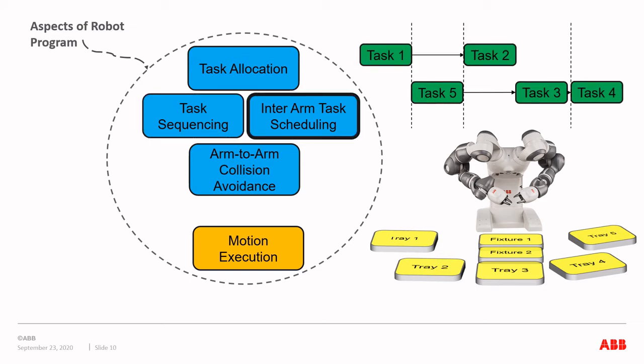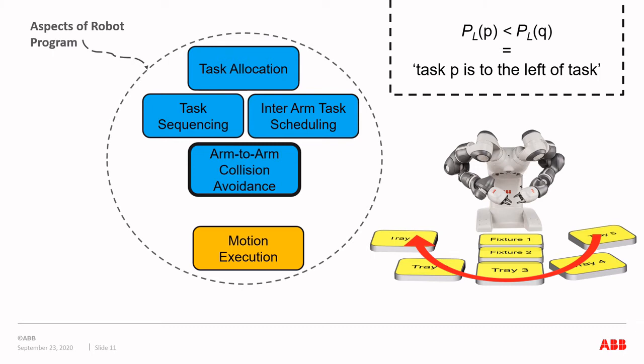A third aspect is inter-arm task scheduling, or the overall application scheduling, where we assign start times for all tasks according to application constraints. For example, we constrain arms from working on the fixture at the same time. A fourth aspect is arm-to-arm collision avoidance. The arm-to-surrounding collision avoidance is handled by the motion execution and is out of scope for our model. The arm-to-arm collision avoidance ensures arms do not collide during operation given the pre-computed motions. Collision avoidance is in its core a spatiotemporal problem.